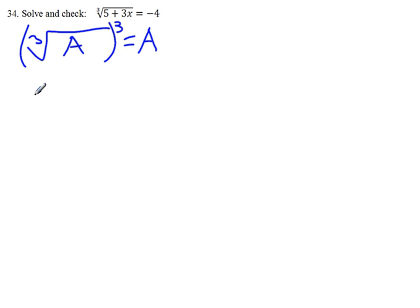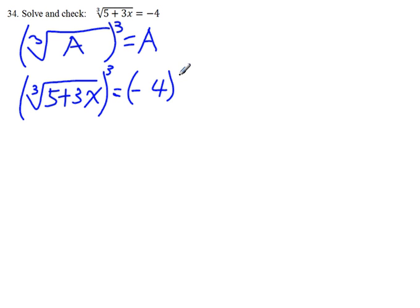So we raise each of the two sides of the equation to the third power. Cube root of 5 plus 3x equals negative 4. And raise each of the sides of the equation to the third power.